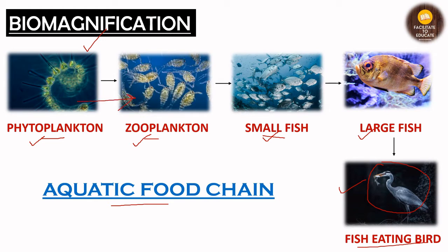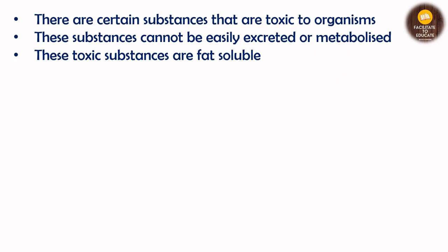We know that as we move from the first trophic level to the last, energy is decreasing. But what happens to substances that are poisonous to organisms — do they decrease or increase with increasing trophic levels? There are certain substances toxic to organisms, such as fertilizers, pesticides, herbicides, and heavy metals. They are not good for us and they are toxic to many organisms.